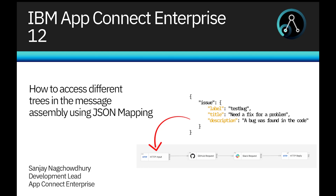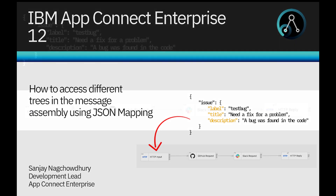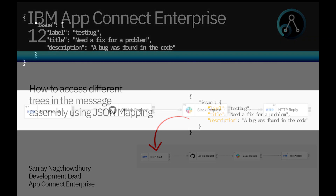Hi, I'm Sanjay Nakhchadri, development lead for the IBM AppConnect Enterprise product. In this video, I'll demonstrate how you can access different parts of the message assembly when using JSON mapping with Discovery Connector nodes. The enhancements were added in IBM AppConnect Enterprise version 12.0.10.